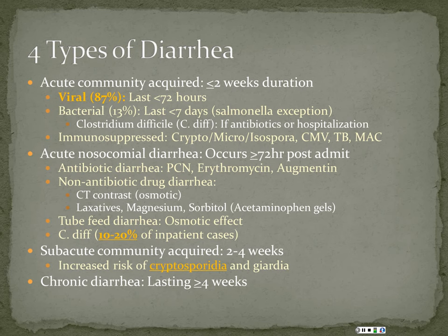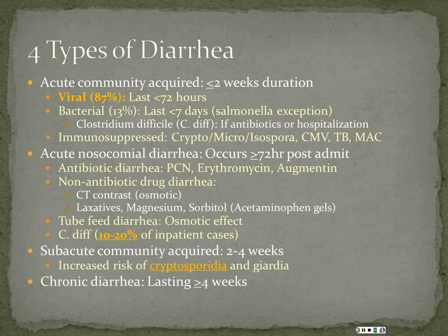The third category is subacute community-acquired diarrhea. As you move from acute to chronic diarrhea — diarrhea lasting more than four weeks — there's a period where it's unlikely to be viral or bacterial, but not yet chronic. In that subacute category, start thinking: could the patient have cryptosporidia, giardia, or some parasitic infection? Most bacterial or viral infections will have resolved before you reach that stage. Once you reach the chronic state, start thinking of inflammatory bowel disease, cancer, or something atypical.